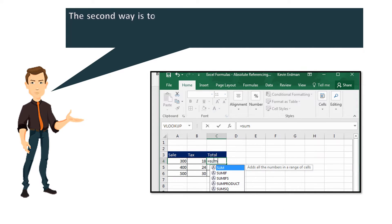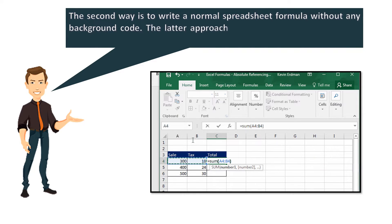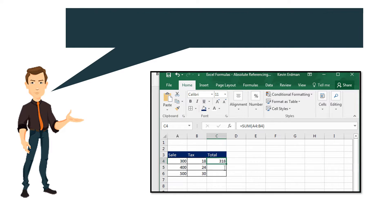The second way is to write a normal spreadsheet formula without any background code. The latter approach is better for people who don't like enabling macros or who aren't comfortable with UDFs. The downside though is that you need a couple of calculation columns.